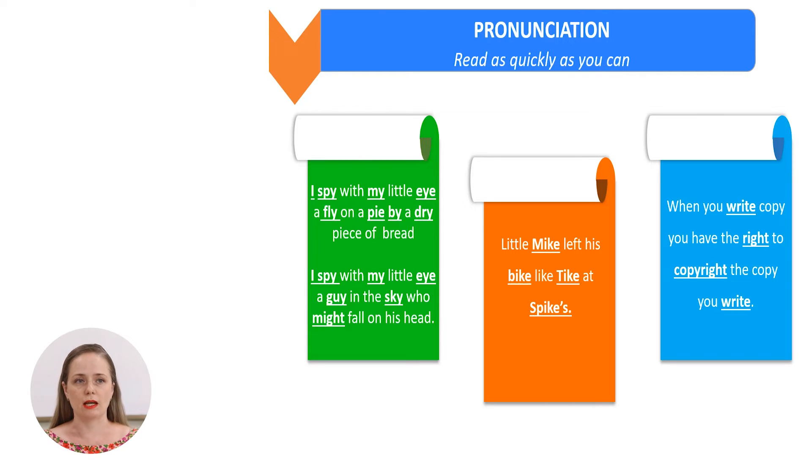Very well. And the last one. This is a little bit more difficult. As slowly as possible. I spy with my little eye a fly on a pie by a dry piece of bread. I spy with my little eye a guy in the sky who might fall on his head. Very well. Let's try quicker. I spy with my little eye a fly on a pie by a dry piece of bread. I spy with my little eye a guy in the sky who might fall on his head. Very well.